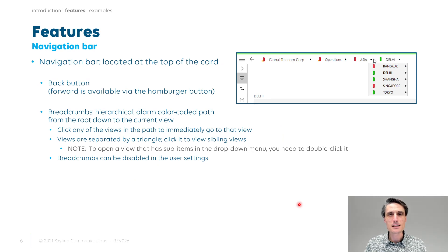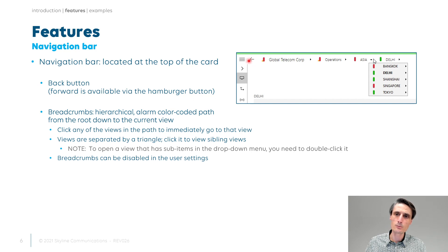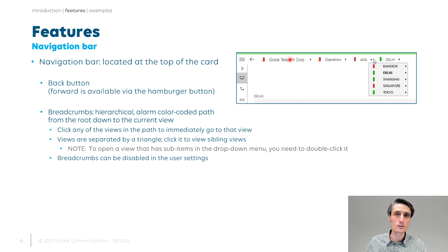Let's take a quick look at the navigation breadcrumbs bar at the top. First of all, you have a back button there. The forward button is available but it is behind the hamburger menu, so if you click on the hamburger menu you also have the forward available. The breadcrumbs show you which view you're currently looking at, and you immediately see all the items that are the parent or on top of that site or view, so you can also see what is happening at a higher level. For instance, while your current view might be perfectly okay, you can see that a higher level might suddenly have an alarm.